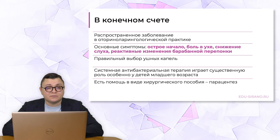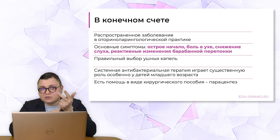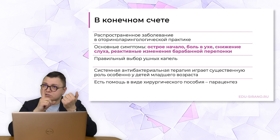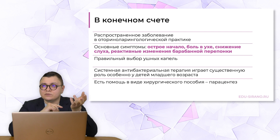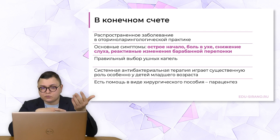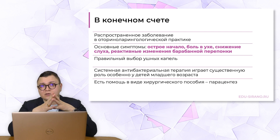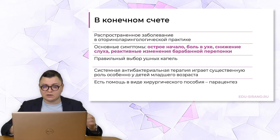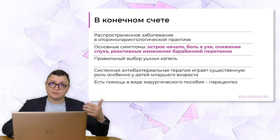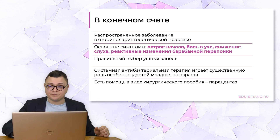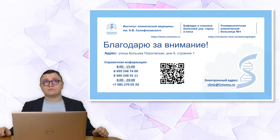Итак, в заключение: острый средний отит – это частое заболевание в оториноларингологической практике. Оно характеризуется острым началом, обязательным вовлечением барабанной перепонки – она становится воспалённой – и болью в ухе. Это триада симптомов острого среднего отита. Важно правильно выбирать ушные капли: при отсутствии перфорации – обезболивание, при наличии перфорации – антибактериальные препараты. Разгрузочная терапия в нос, системные антибиотики по показаниям и помнить о возможности парацинтеза для облегчения и ускорения выздоровления. При наличии гноя – парацинтез обязателен. Спасибо большое за внимание.